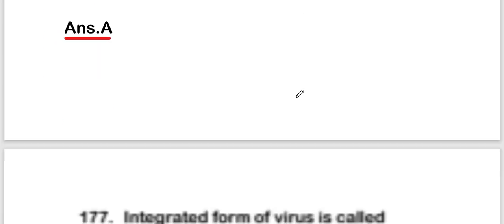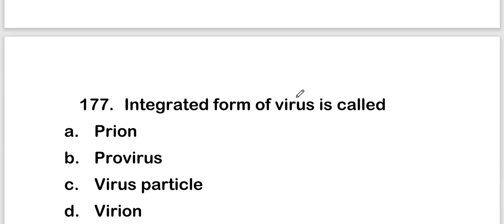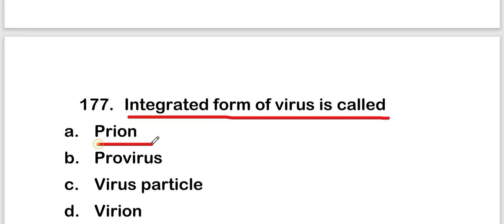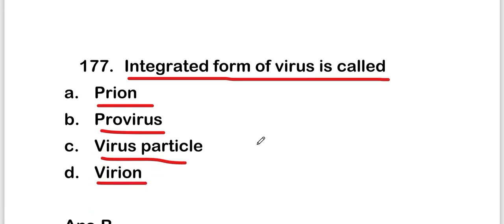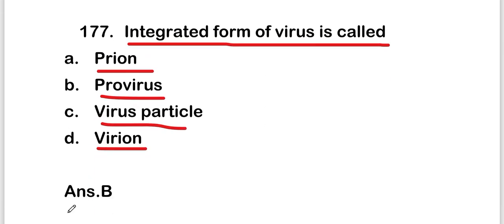Next question: the integrated form of a virus is called — prion, pro-virus, virus particle, or virion. The right answer is option B — pro-virus. So the integrated form of a virus is called pro-virus.